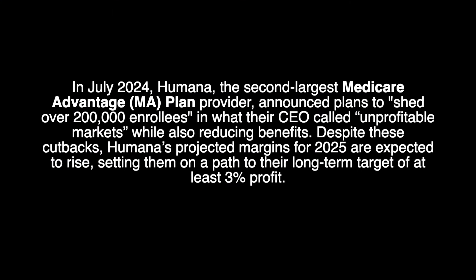In July of 2024, Humana, the second-largest Medicare Advantage plan provider, announced plans to shed over 200,000 enrollees in what their CEO called unprofitable markets, while also reducing benefits. Despite these cutbacks, Humana's projected margins for 2025 are expected to rise, setting them on a path to their long-term target of at least a 3% profit.